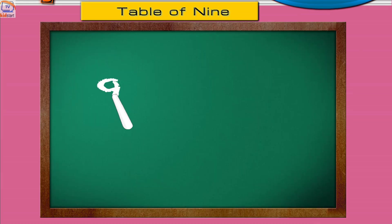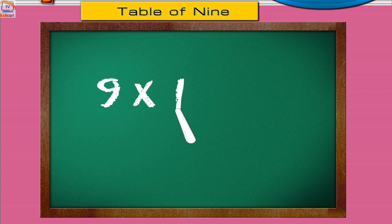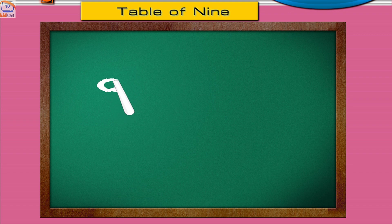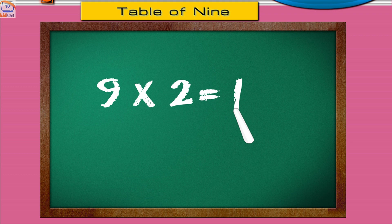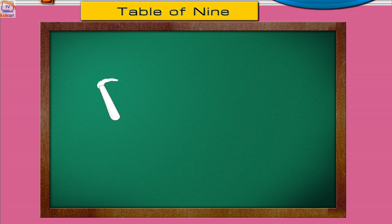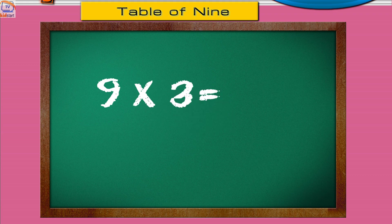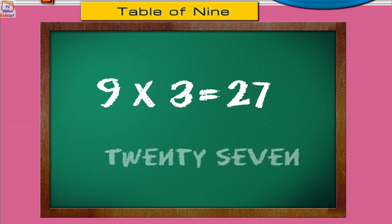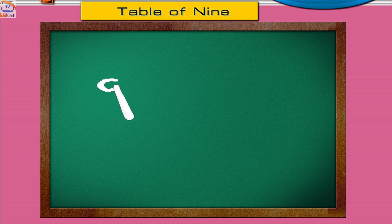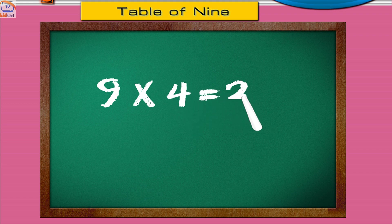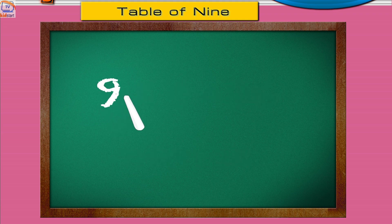Nine ones are nine. Nine twos are eighteen. Nine threes are twenty-seven. Nine fours are thirty-six. Nine fives are forty-five.